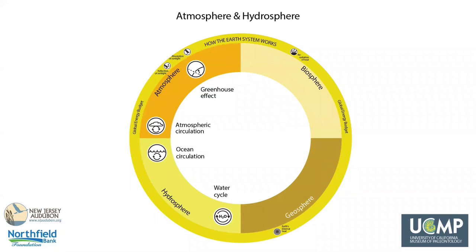The global energy budget powers the fundamental processes that shape the world around us. To explain how the atmosphere and hydrosphere work, it's important to understand these four processes: greenhouse effect, atmospheric circulation, ocean circulation, and the water cycle.